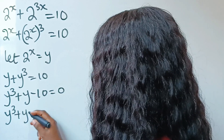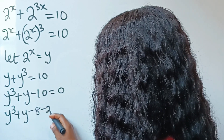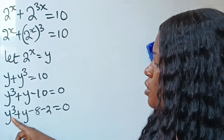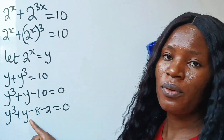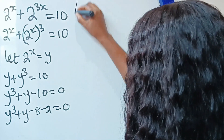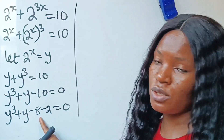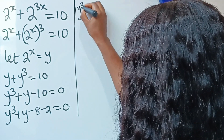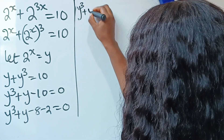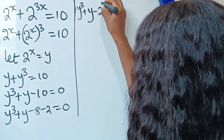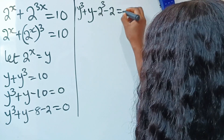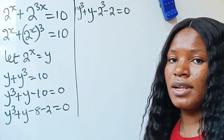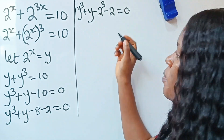So we have y to the power of 3 plus y minus 10 equals 0. We can write minus 10 as minus 8 minus 2. Why do I choose that? Because I need a value to the power of 3 and the same value here — this gives 2 to the power of 3 and 2. So we now have y to the power of 3 plus y minus 2 to the power of 3 minus 2 equals 0.